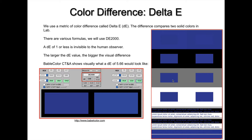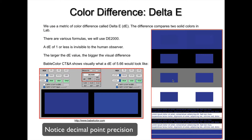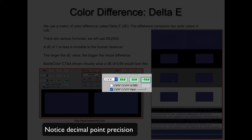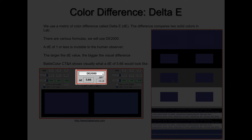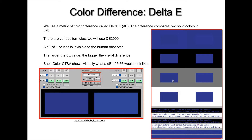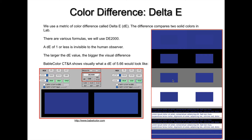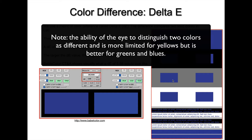Here's an example using a piece of software called BabelColor CTNA. I've inserted Lab values on the left and a different set of Lab values on the right, and the software calculates the Delta E difference. Hopefully you can visually see what a Delta E of 5.66 looks like — it's pretty subtle. BabelColor shows the differences visually using different surrounds: blue against blue, blue against black, blue against gray. A Delta E of 5.66 is pretty small.